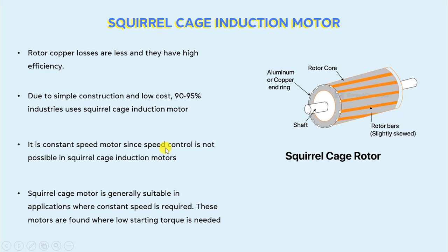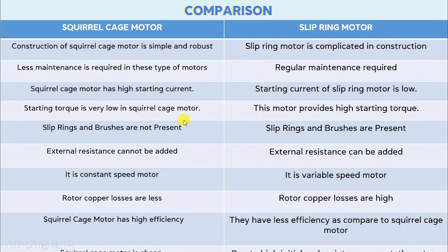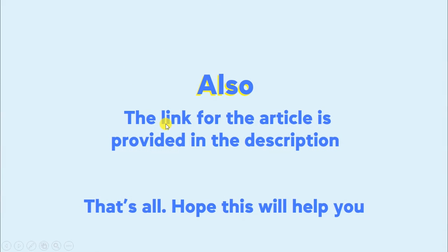Squirrel cage induction motors are generally suitable in applications where constant speed is required. These motors are also found where low starting torque is acceptable. From the above discussion, we can say that squirrel cage induction motors are generally found in applications where constant speed is required and low starting torque is preferable. This is the comparison chart of a squirrel cage induction motor and slip ring induction motor, covering all the points discussed earlier in the video. If you want to read a detailed article on squirrel cage and slip ring induction motors, a link will be provided in the description.